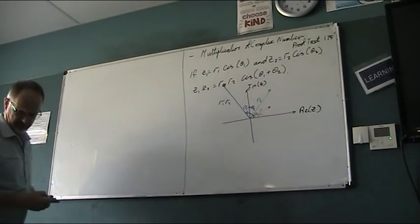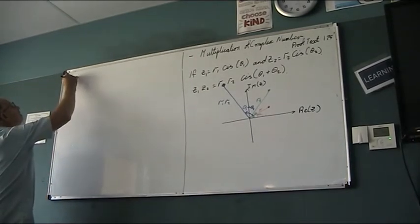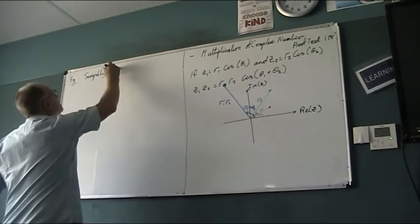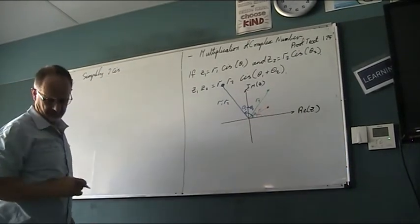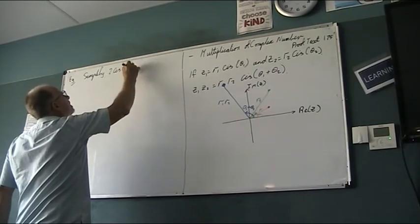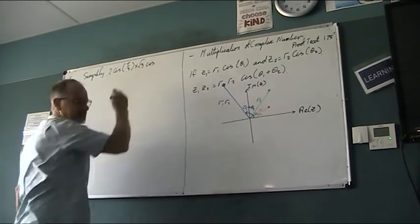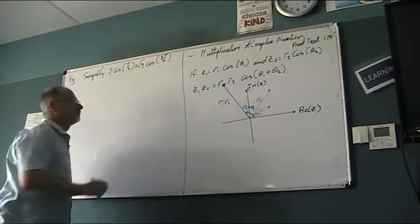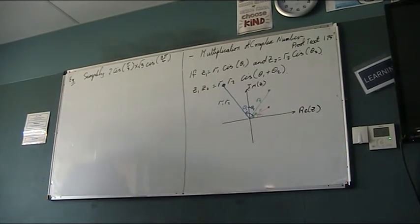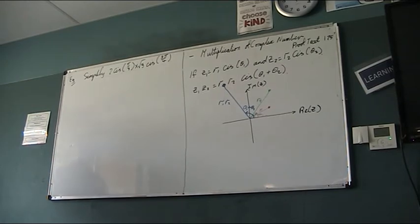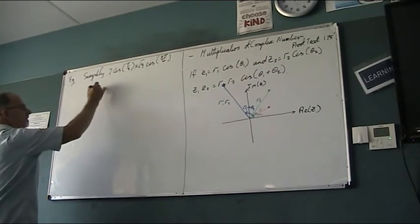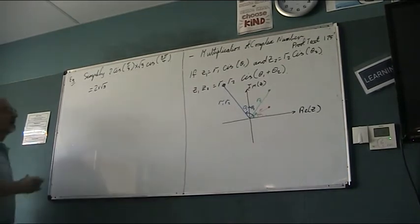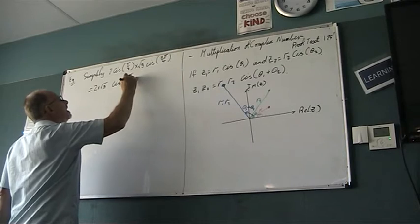Alright, so here's an example. So I'm going to simplify 2 cis pi on 3 times 3 cis 2 pi on 3. The pattern says when we multiply those together, you multiply your two R values and you add your angles.